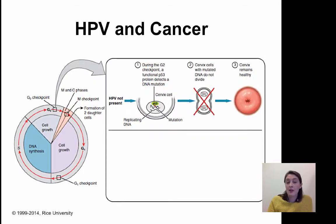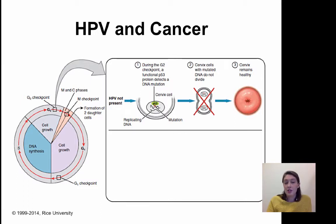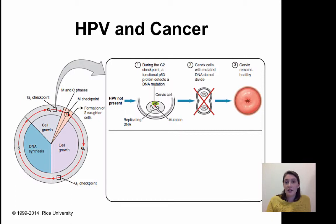One of the mechanisms by which HPV can directly cause a cell to become transformed into a cancerous cell is by disrupting the normal checks in place in the cell cycle. You can see the cell cycle on the left here with the traditional G phases, interphase, as well as the M phase and S phase. Before the cell decides to divide, it goes through the G2 checkpoint, where it checks to make sure it's in a good state. At this checkpoint, the cell checks whether its DNA looks okay and whether there are any DNA mutations or damage.